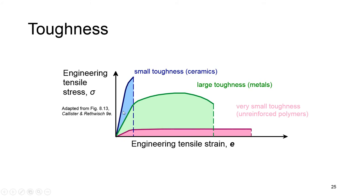The blue curve represents brittle materials that have very little ductility or plastic deformation. The pink curve is generally for materials like polymers that have very low strength but high strain. The green curve is generally for metals, which is why we expect higher toughness in metals. The area related to the elastic part is called elastic energy, and the area related to the non-linear part is called plastic energy.